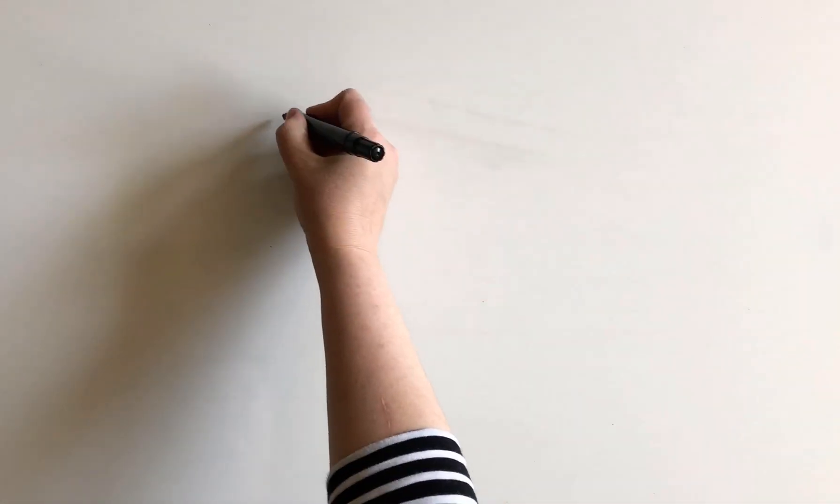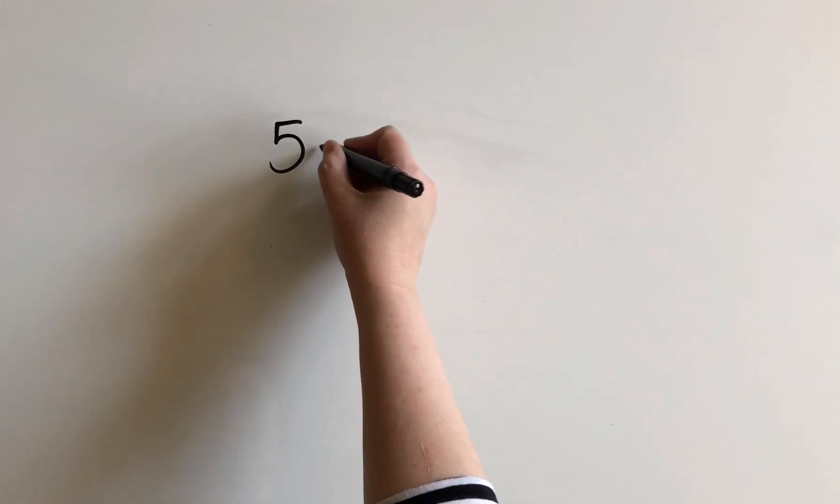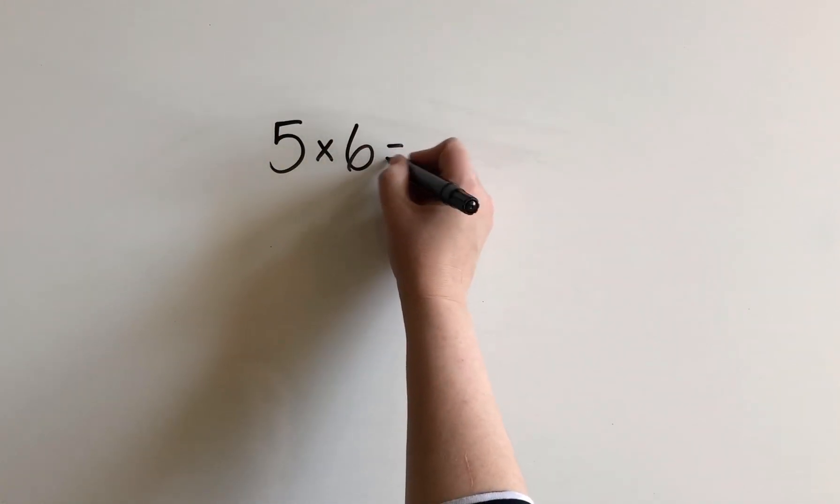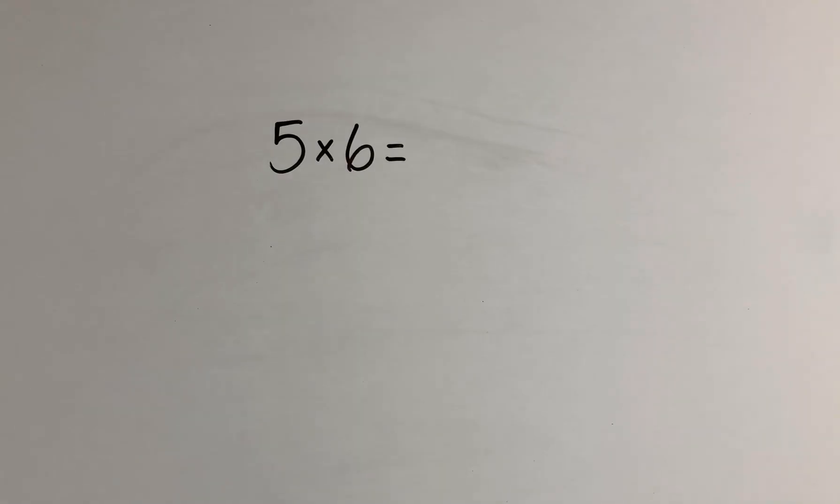Let's try another one. Let's try 5 times 6. So you could solve this by skip counting. Lots of people like to skip count when they solve a 5's fact too. And how you would do that would be you'd say 5, 10, 15, 20, 25, 30. And that is one way to do this.